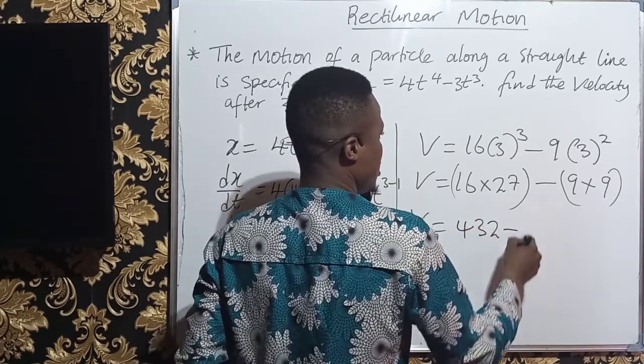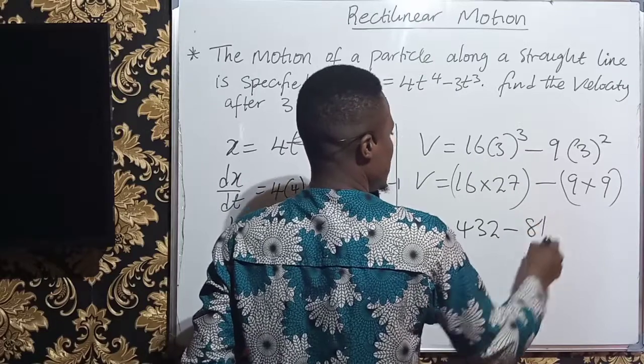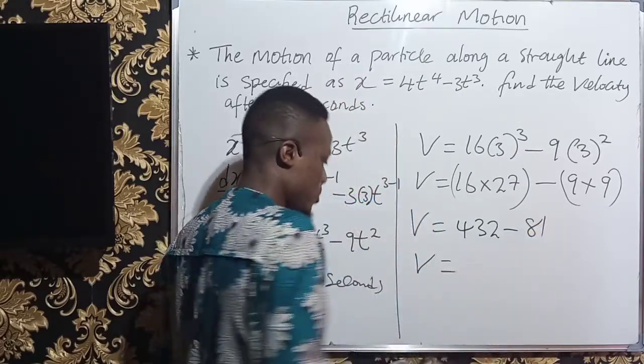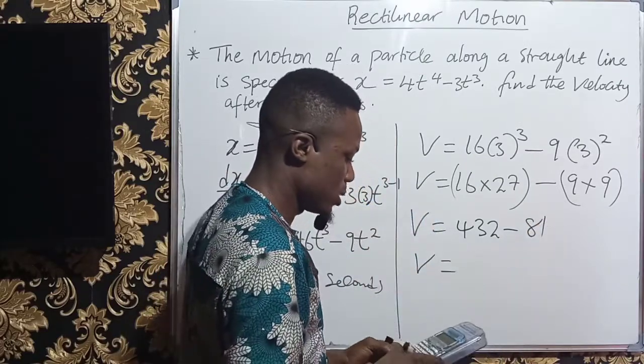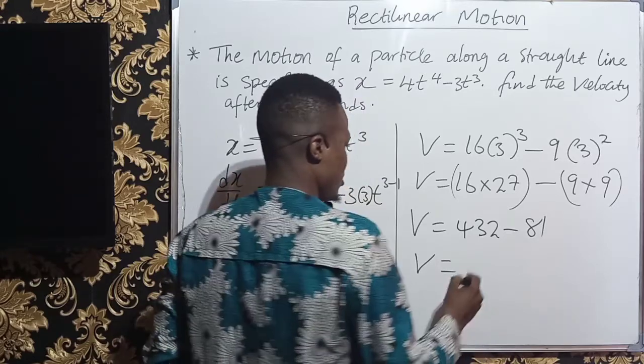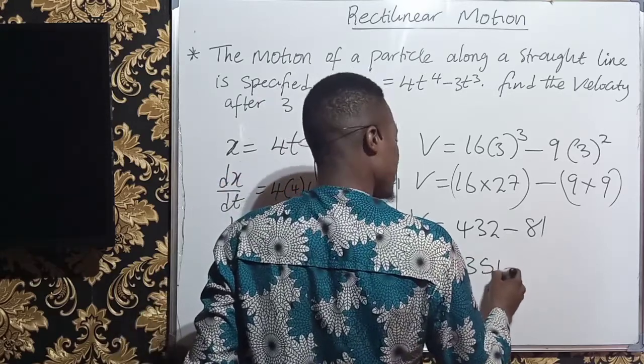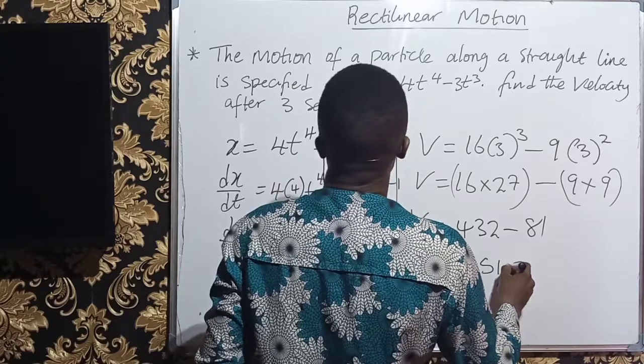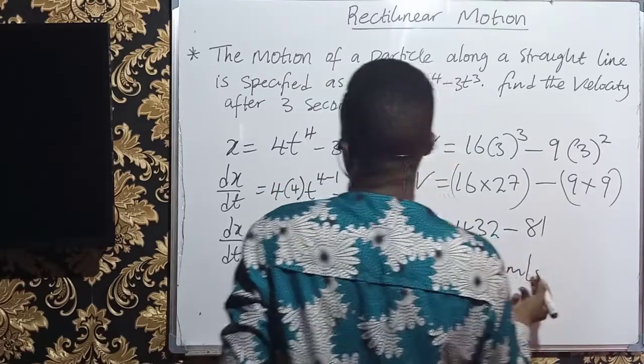So we have to simplify this and subtract. So v will give me 16 times 27 will give me 432, minus 9 times 9 is 81. So when I take this subtraction, I shall have it as 351, 351 meters per second if it is given in meters.